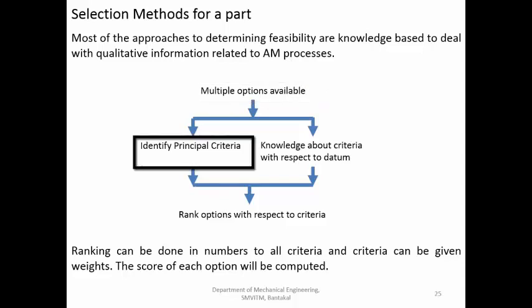The principal criteria are the most important features you want from the component. These features could be: very high surface finish, making a completely hollow component, very high strength, or producing the component in several colors. You then decide which among these four features is the most important one and give it more weightage, while giving lesser weightage to the remaining features.